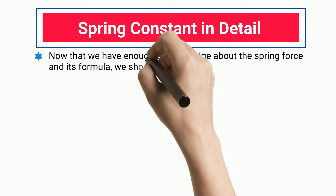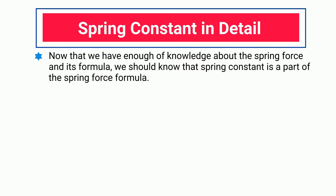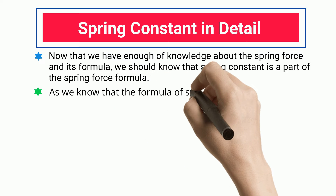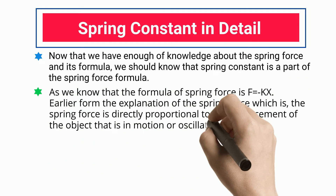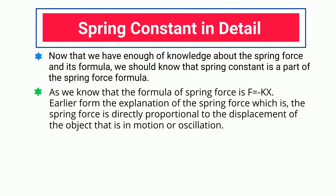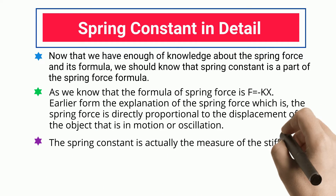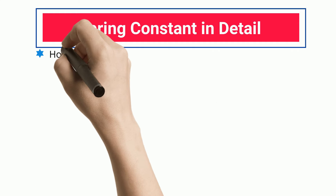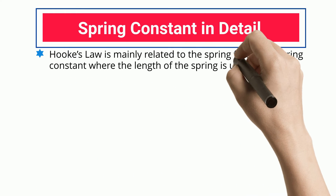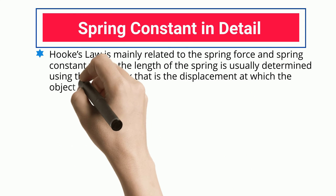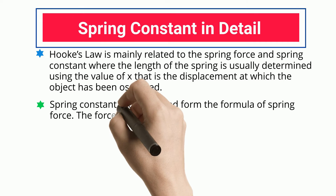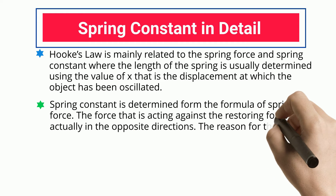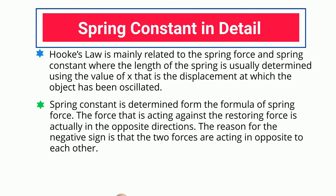The spring constant is a part of the spring force formula F equals kx. It is the measure of the stiffness of an object under oscillation. Hooke's Law relates spring force and spring constant, where the length of the spring is determined using x, the displacement. The force acting against the restoring force acts in the opposite direction, which is the reason for the negative sign in the formula.